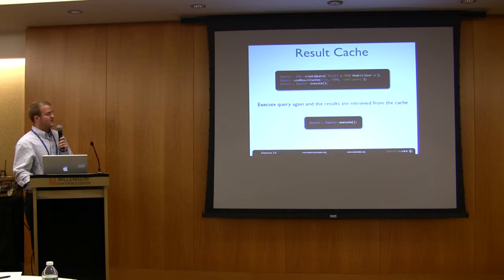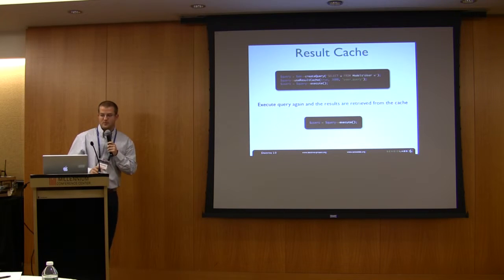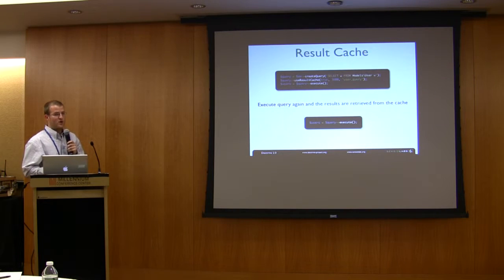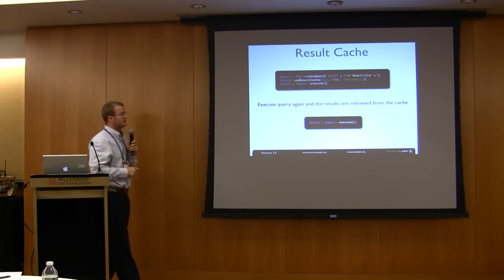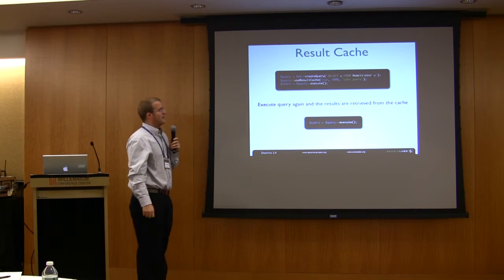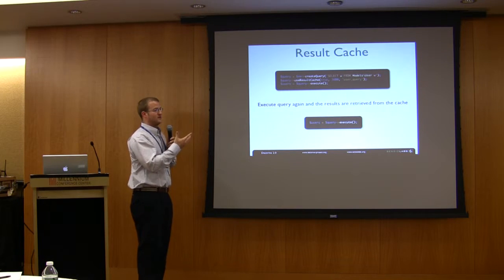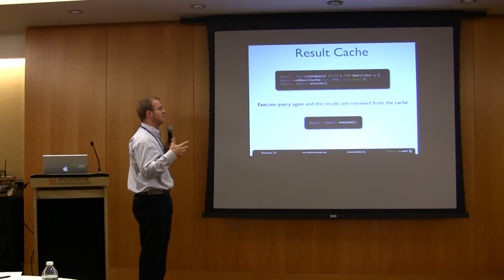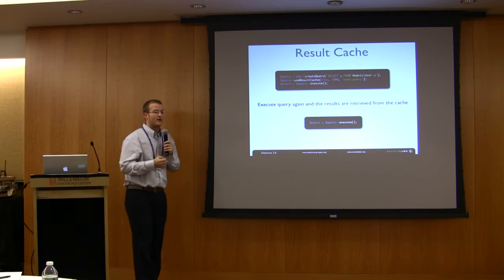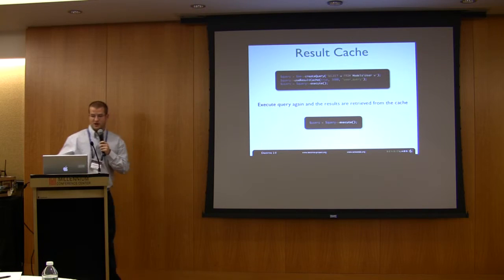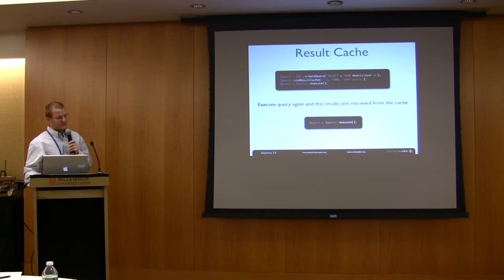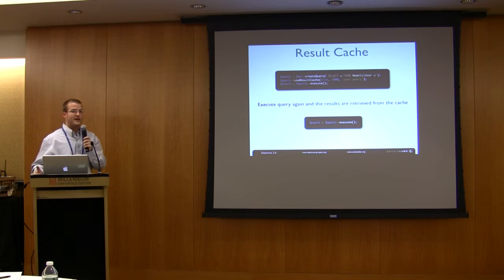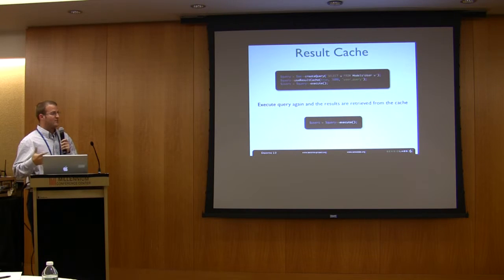Another feature built into Doctrine is the result cache. When we run a DQL query, if you don't want to hit the database every single time, you can use the use result cache method. If you've configured a cache driver — memcache, APC, or whatever — it will save the result of the query there. The next time you hit that query, it'll get the results from the cache driver instead of the database. You can implement smart caching strategies to ensure you're never hitting the database unnecessarily, and the cache is cleared whenever data changes using events.